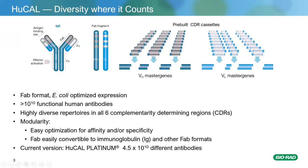The diversity in these CDR cassettes comes from a process called trinucleotide mutagenesis, where we use a master mix of codons at each amino acid position to reproduce the amino acid distribution seen in nature. As I've described, this library is fully synthetic — it's not an amplified immune repertoire from a human or immunized animal. It has no immunological bias, no tolerization process. It's hugely diverse, about 10 times the size of a normal immune repertoire, with about 45 billion different antibodies.